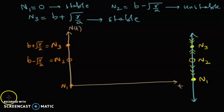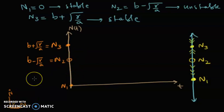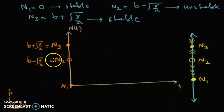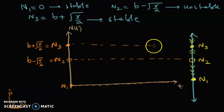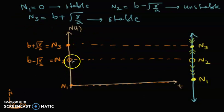Recall when we were drawing n-prime versus n, the n was the x-axis. Now because we are plotting n and t, this axis has become the y-axis. Since n2 is a repeller and unstable, this is the first fixed point, this is the second, and this is the third. If any trajectory between n1 and n2 starts there, it will move towards n1 because it's the attractor.